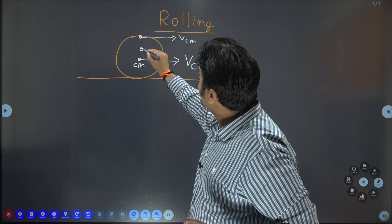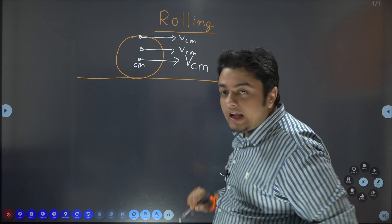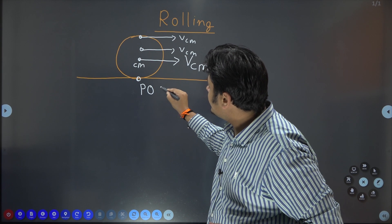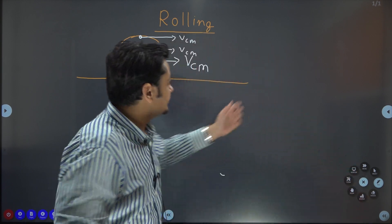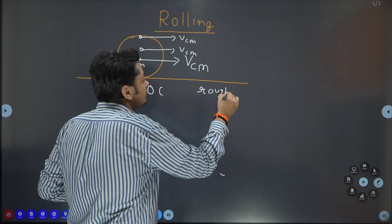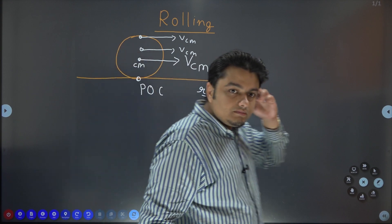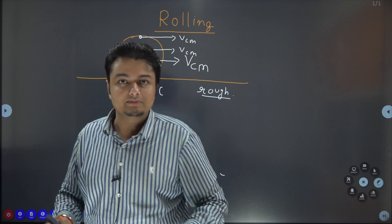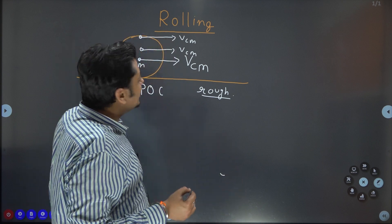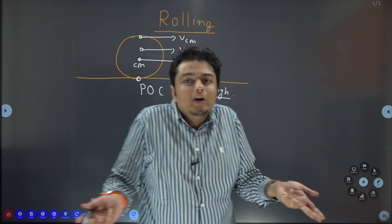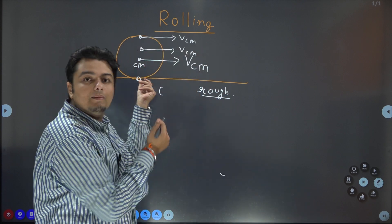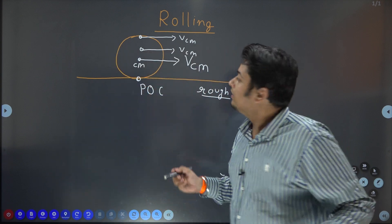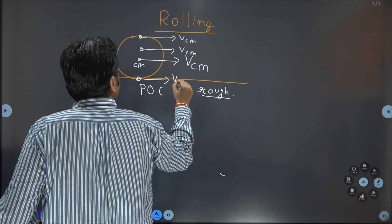Now, what happens is the most important point is POC, the point of contact and obviously this is a rough surface. As we have studied in the chapter friction, friction always opposes relative slipping. So, friction is not concerned about any point on this rigid body. Friction is only concerned about the POC and relative to the ground, this POC is going to slip. It is having also a speed which is VCM.